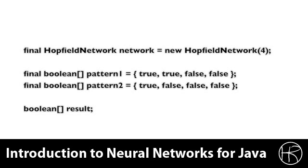Pattern 1 is the input pattern that the neural network is going to be trained with. So we're training it to recognize true true false false. Pattern 2 is the distorted pattern that we're going to present to the neural network to see if it can recognize it.